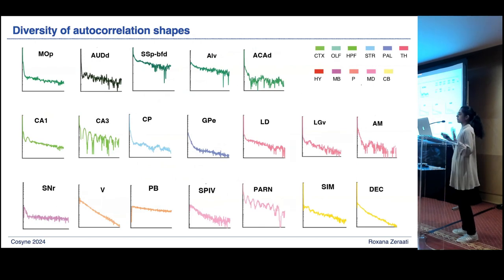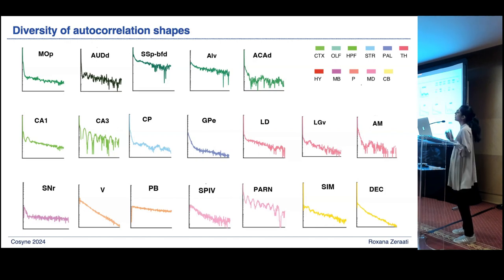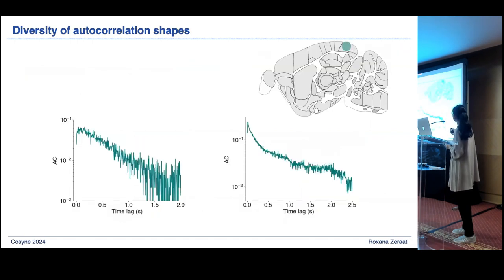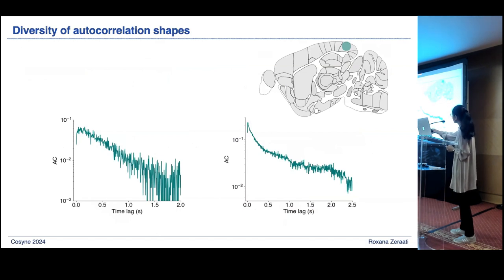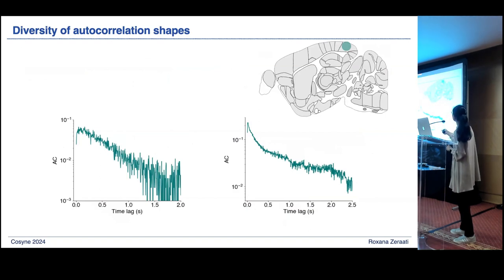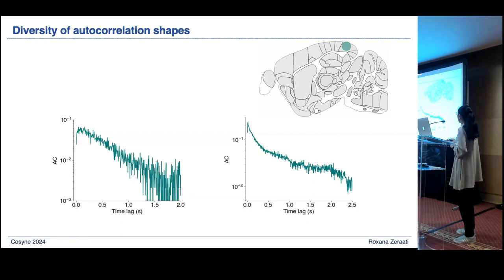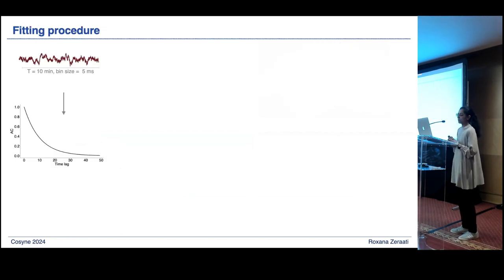To give a sense of what we are fitting: these are example single-unit autocorrelations randomly sampled across all brain areas, and you can appreciate the variety of autocorrelation shapes. Even within a single brain area — primary visual cortex — we see diversity: some autocorrelations look like a single slope suggesting one timescale, while others decay faster at early lags and slower at later lags, suggesting more than one timescale.